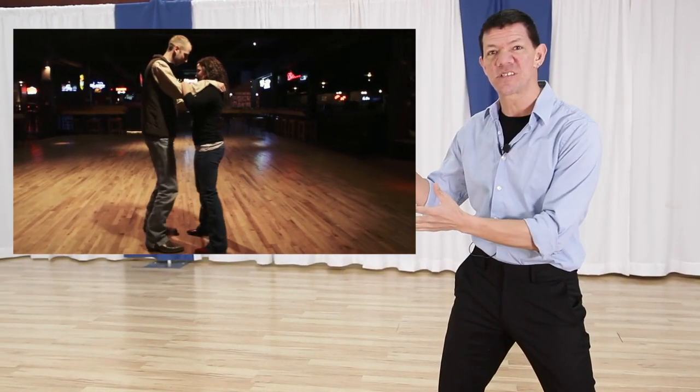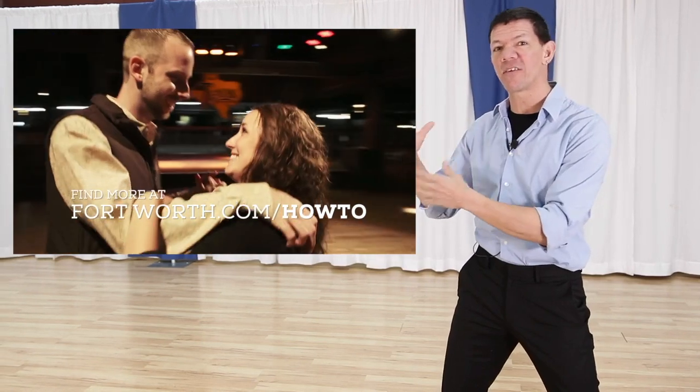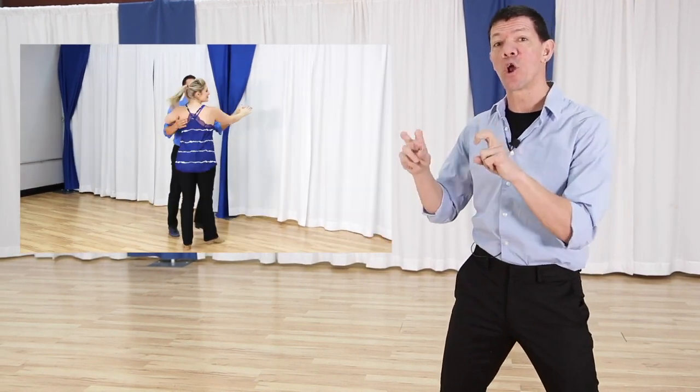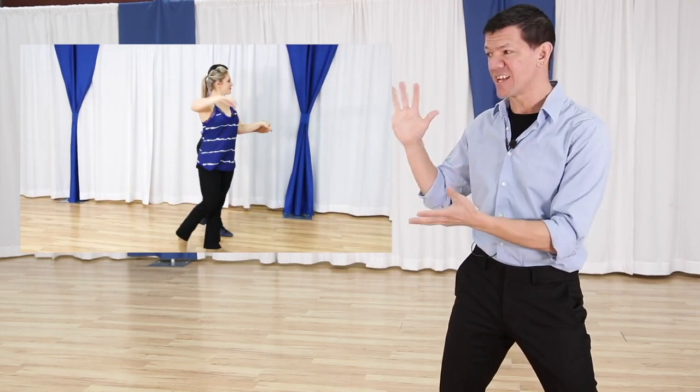So the first version you might see is what we might call a Texas two-step. This kind of evolved out of Urban Cowboy. Another version you might see is the more modern progressive two-step, so we'll take a peek at that progressive two-step.